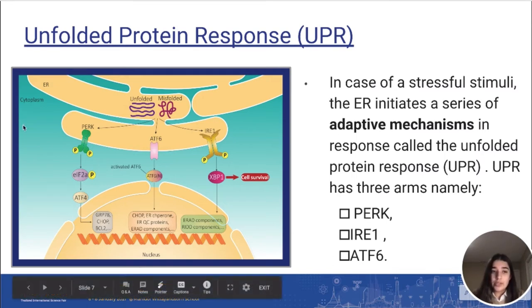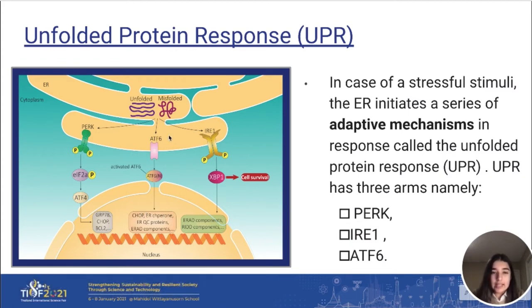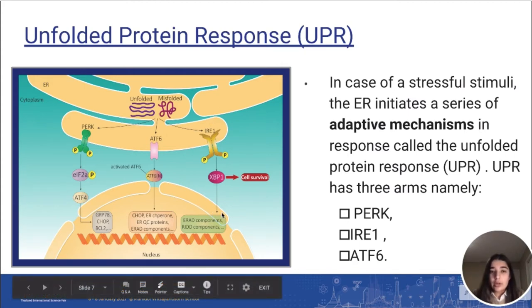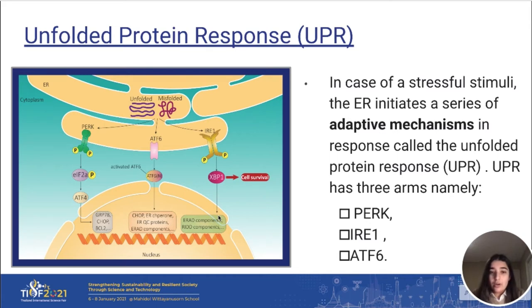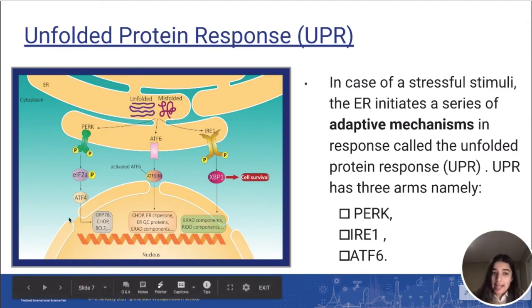The unfolded protein response, as shown in this image, has three arms, namely PERK, ATF6, and IRE-1. We did focus on the IRE-1 arm mainly due to the sole reason that the IRE-1 arm is highly involved in cell survival — it essentially tells cells to survive or encourages cell survival. PERK, on the other hand, encourages cell death.